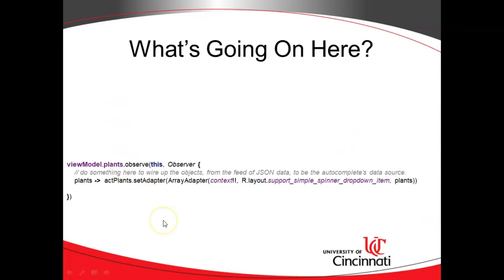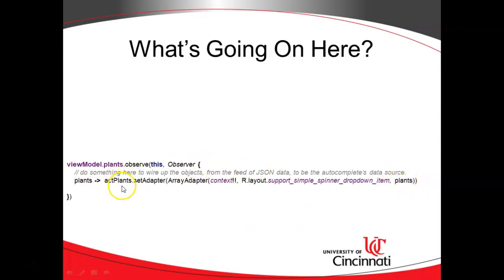This is a video where we are going to wire up some live data to an autocomplete text. What we have here is a lambda where we're observing some live data — in other words, we're looking at data to change. And when that data changes, it's going to come into this open and closed curly. What you see in this lambda is an input parameter called plants — essentially a collection of plants — and then you have the separation of input to output. On the output side, we are using that variable that was passed in and essentially associating it to an autocomplete text. This will get invoked any time the data inside this live data object changes.